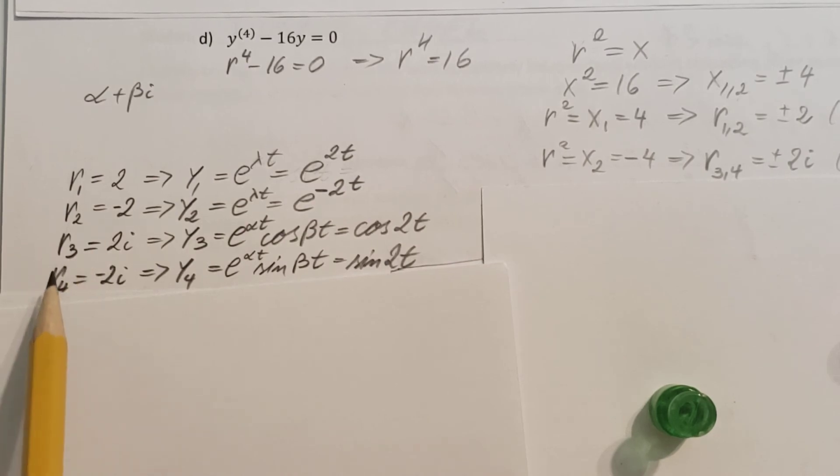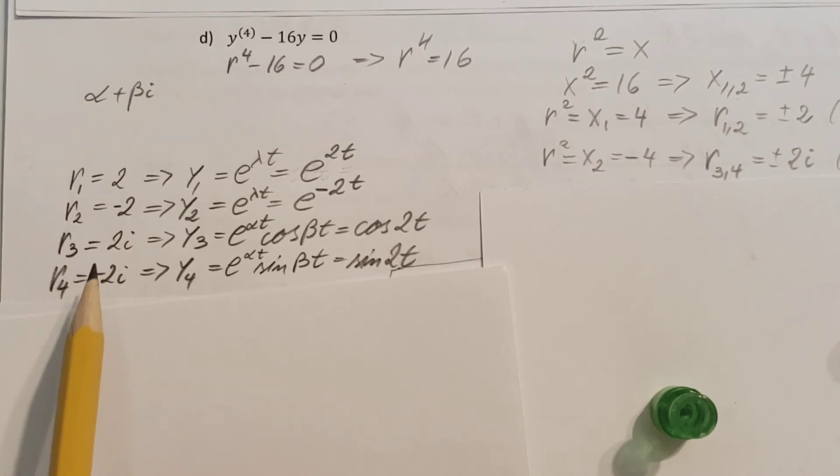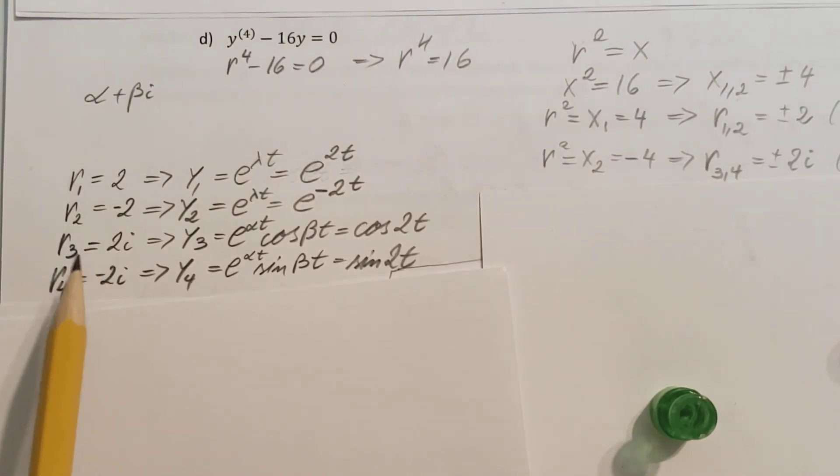For the conjugate, the r4 equals negative 2i. So, for the conjugate, we're simply gonna use e alpha t sine beta t. Where the negative, the conjugate part, will be taking care of the sine.